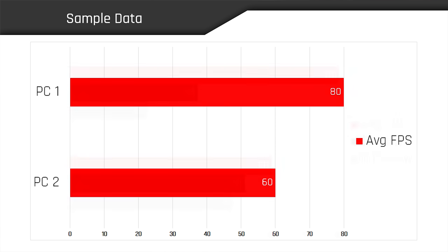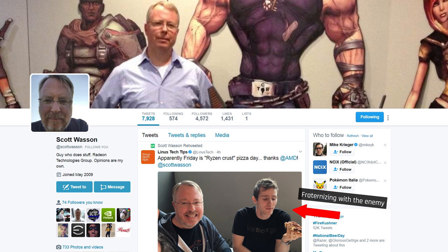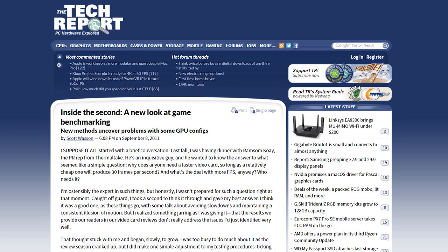That metric is called frame times, which is a concept that was heavily pushed by Scott Wasson, formerly of TechReport, as a means of measuring performance. And while I'm going to sum it up as best as I can today, I've linked his detailed article on the matter in the description for those of you interested.